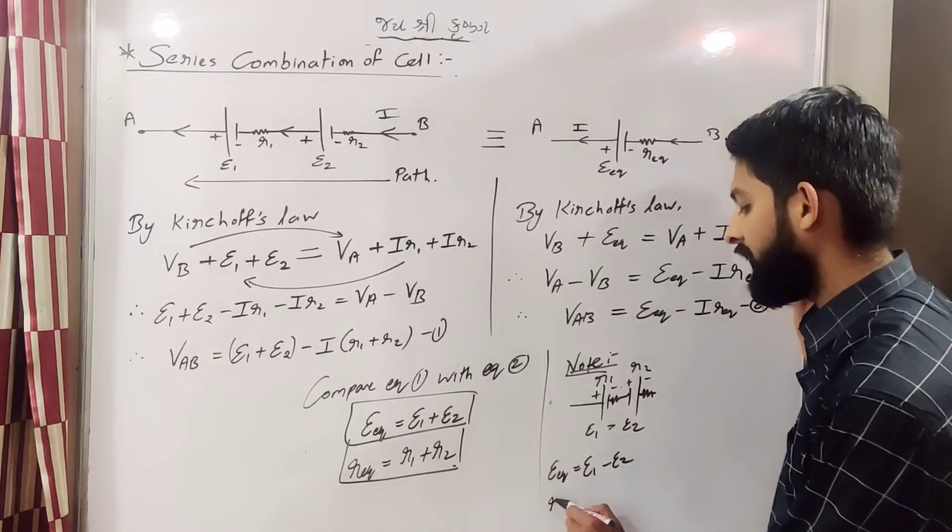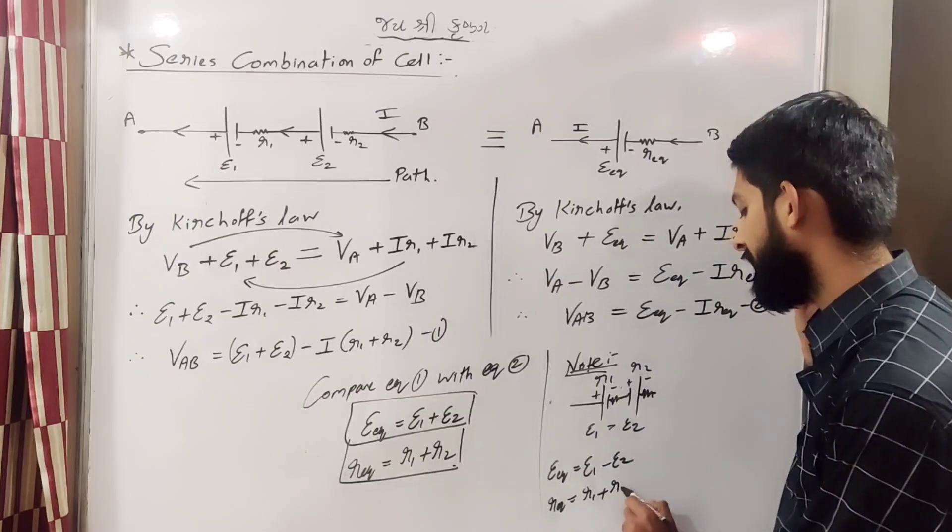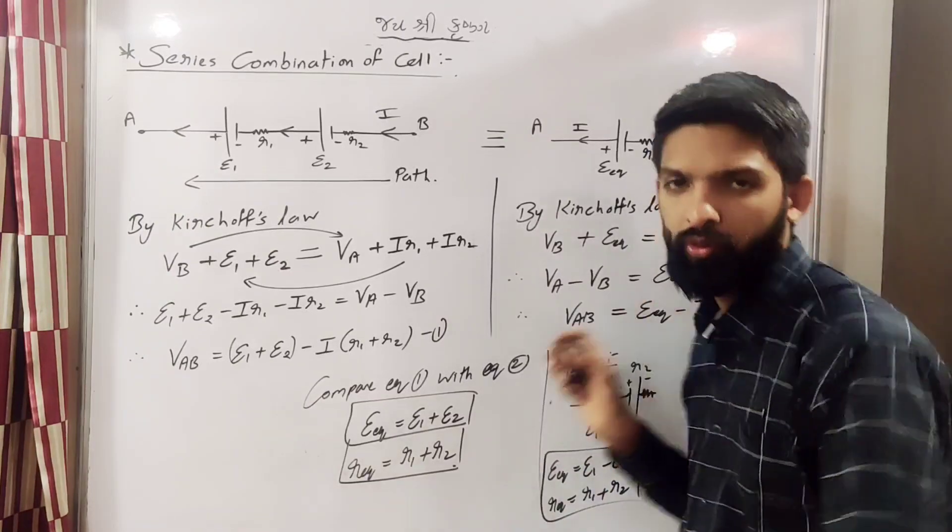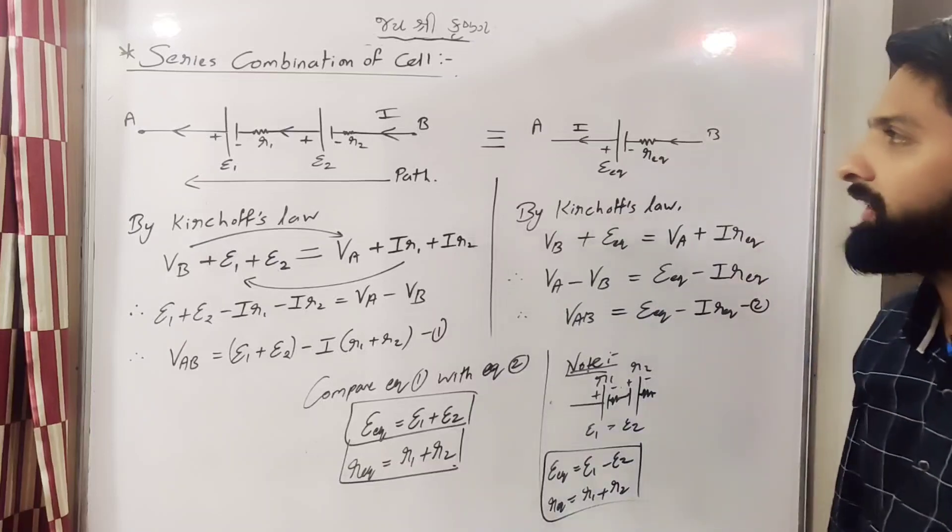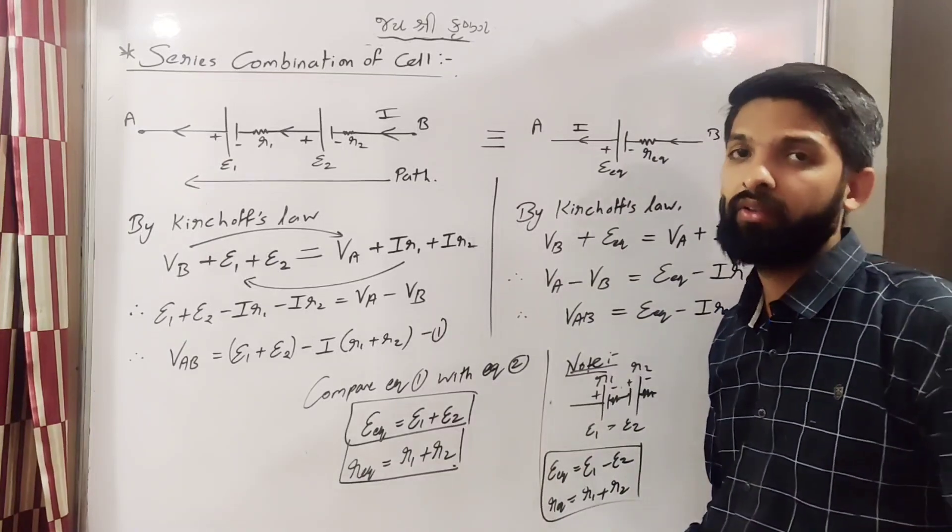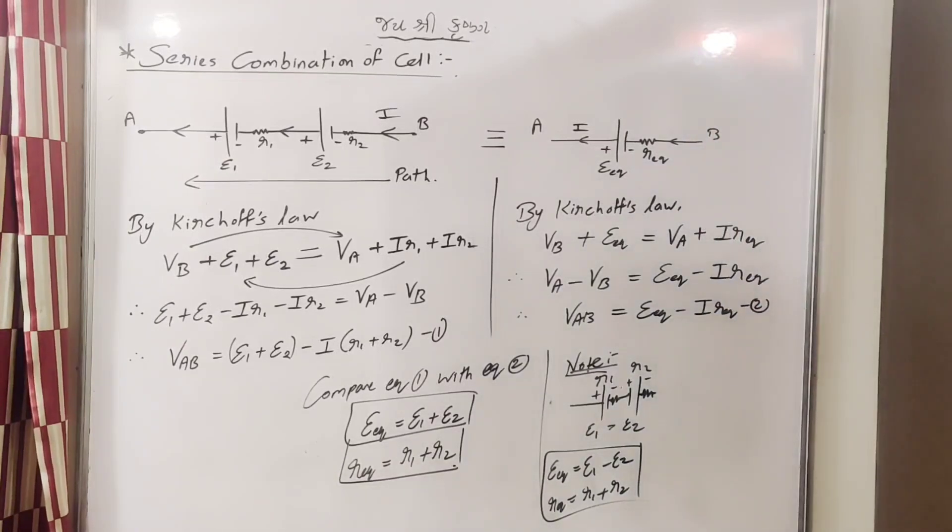R equivalent hota r1 plus r2. Resistance series mein add-on honge. Okay, so this is the derivation for the series combination of the cell. Thank you.